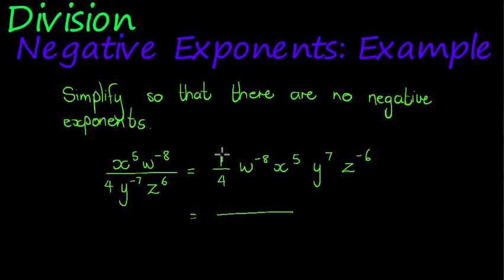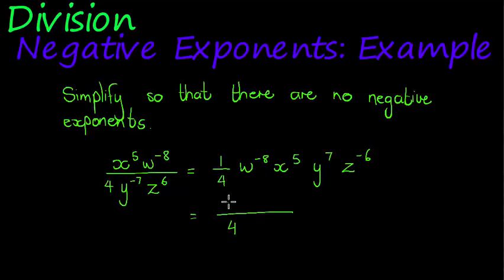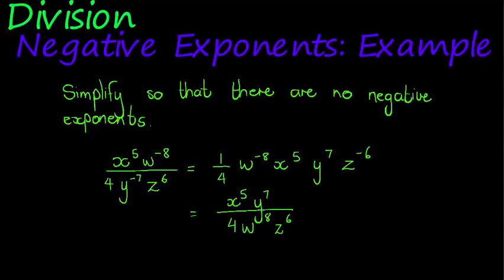After I've done that, I can write the whole thing again as a fraction. I've got a 1 in the numerator — sometimes not necessary to write it — and a 4 in the denominator. Now, everything with positive exponents will come in the numerator and everything with negative exponents will be in the denominator, and they will be positive again. So we'll have x to the power of 5 and y to the power of 7 in the numerator, and w to the power of 8 and z to the power of 6 in the denominator.